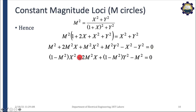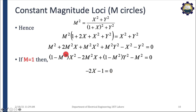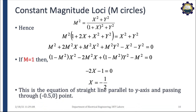Rearranging this equation, when M equals 1 it reduces to the linear equation: minus 2x plus 1 equals zero, giving x equals minus 1/2. This means when the closed loop magnitude is exactly 1, the locus is a straight line parallel to the y-axis passing through the point (minus 1/2, 0).